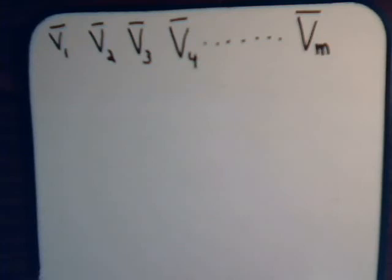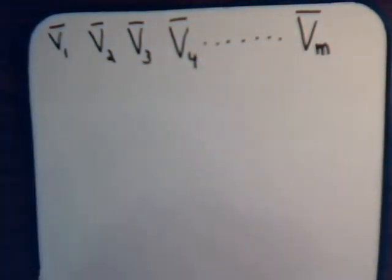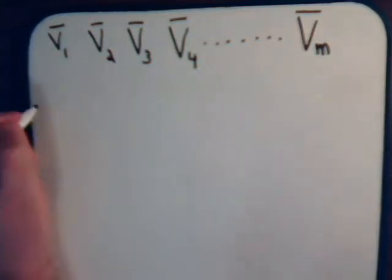And to prove that, let's assume the opposite. Say we have a series of vectors that are orthogonal and they are linearly dependent. Now, if that's true, then we can have a constant.